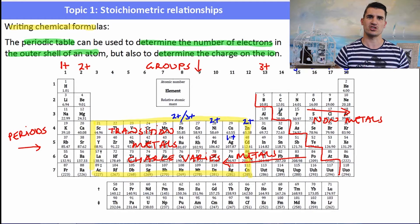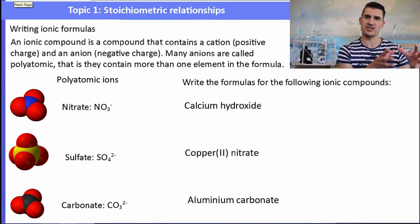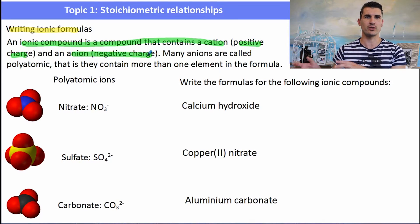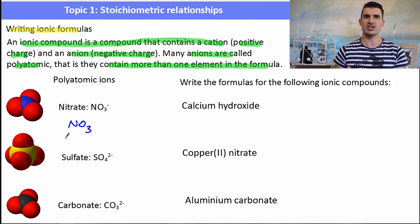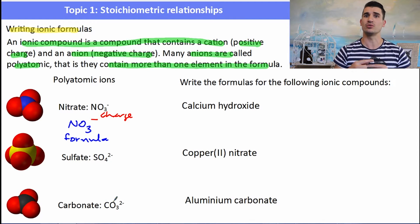There are quite a few other charges you'll need to know — ask your teacher to see the electrovalency table for the polyatomic ions. If we're asked to write ionic formulas, we need a positively charged ion (a cation) and a negatively charged ion (an anion). Many anions are called polyatomic because they contain more than one element in their formula. Some polyatomic ions you need to know: nitrate has one N and three O's with a charge of 1−; sulfate is SO4 2−; and carbonate is CO3 2−. These are three that you really need to know, but there's a whole list of others as well.